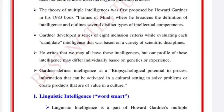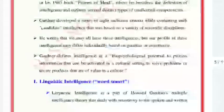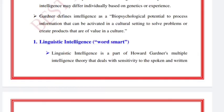Gardner evaluated eight intelligences using criteria across various scientific disciplines. He concluded that we may have all these intelligences, but our profile of these intelligences may differ individually based on genetics and experience. He used the term 'bio-psychological potential' for intelligence — a potential that can be activated in a cultural setting to solve problems and create products that are of value in a culture.